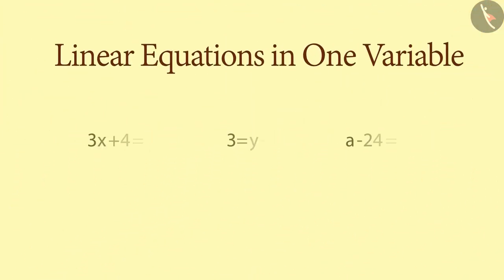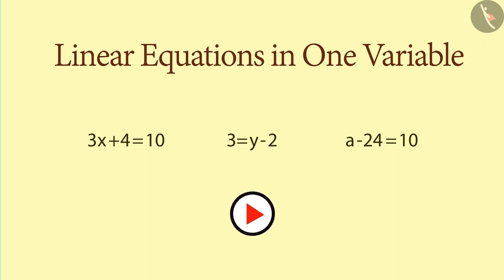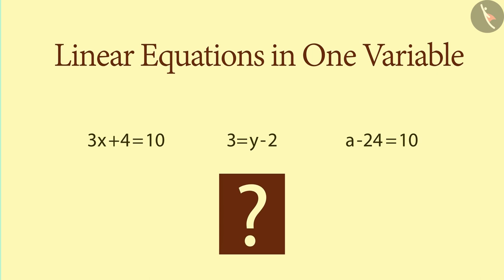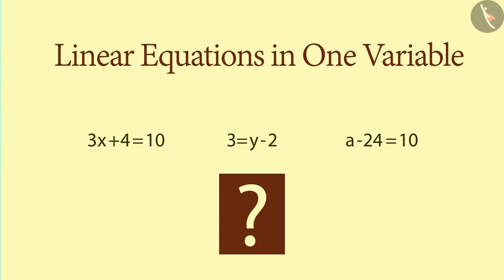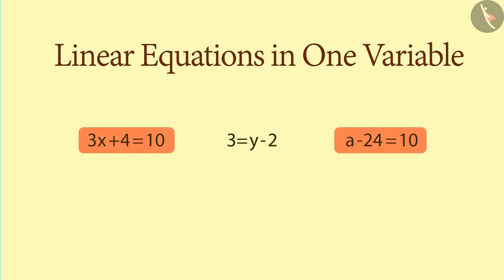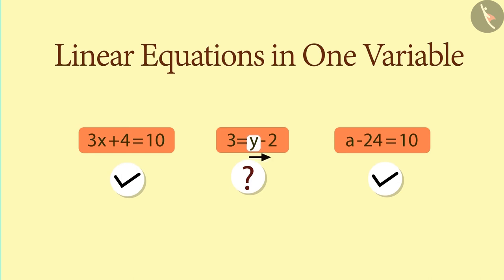Let us take another example. Observe these equations carefully. Can you find which of these equations are linear equations in one variable? The first and third are definitely linear equations in one variable, but what about the second equation? There is some confusion in the second equation because the variable is to the right of the equality sign — but this is also a linear equation with one variable. Can you tell why?